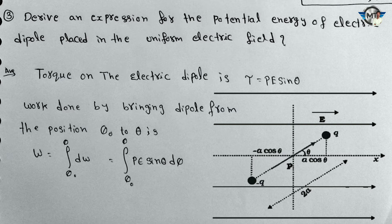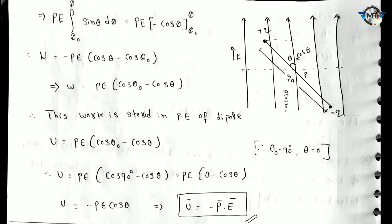Here is the work done by bringing the dipole. W is equal to integral from theta naught to theta of dw. So dw is equal to pE sin theta d theta. We solve the integral: integral of sin theta d theta gives minus cos theta. Since pE is constant, putting in the limits gives W is equal to pE into cos theta naught minus cos theta.